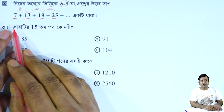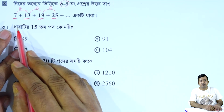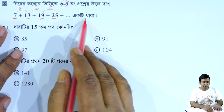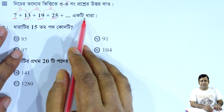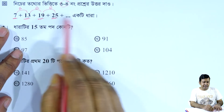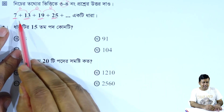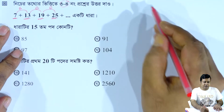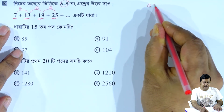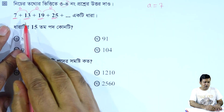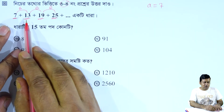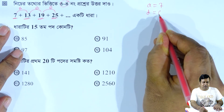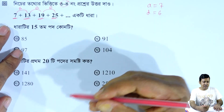So, if we get to this channel, the channel gives us the common difference. D is equal to 6.